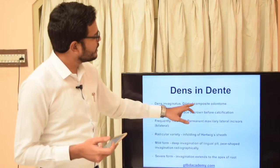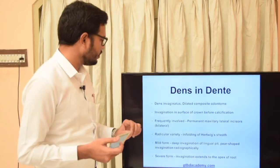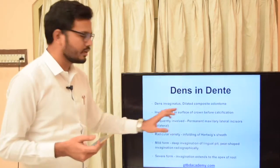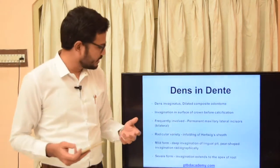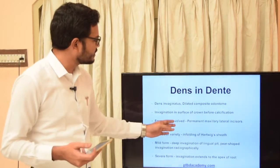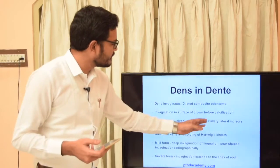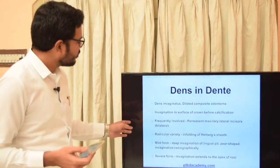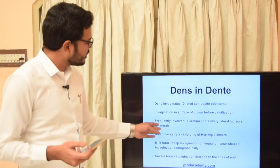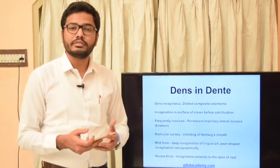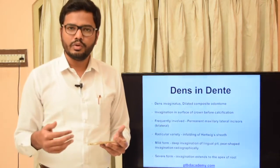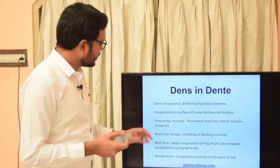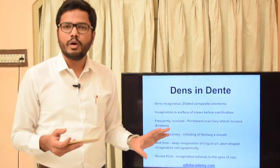It is also called dilated composite odontome. It occurs because of invagination of the surface of the crown before calcification. The most frequently involved teeth are the permanent maxillary lateral incisors. There is also a radicular variety of dens in dente, which forms because of infolding of Hertwig's epithelial root sheath.